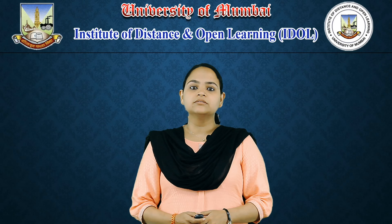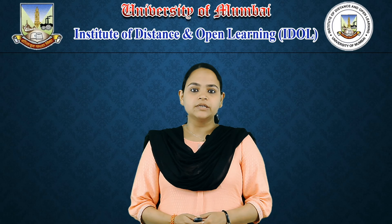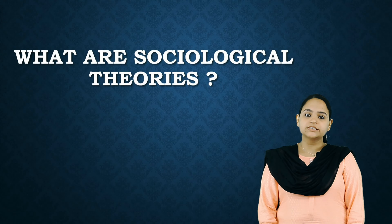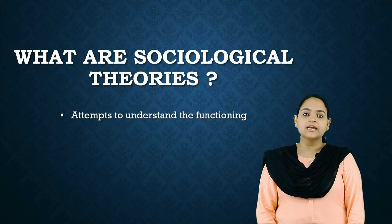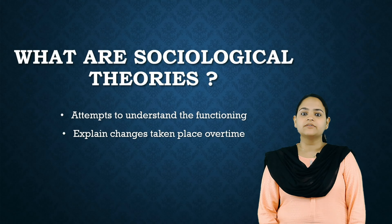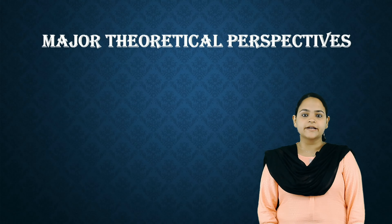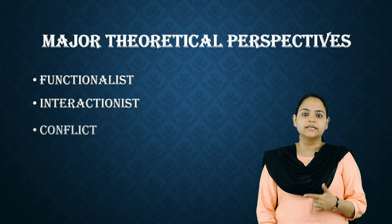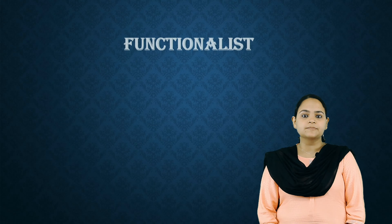Before moving on to different theoretical perspectives, let us first understand the meaning of a theory. Sociological theories refer to the attempts made to understand the functioning of a society and to explain the changes that have taken place over time. The four major theoretical perspectives are the functionalist, interactionist, conflict, and critical. Let us first discuss the functionalist perspective.